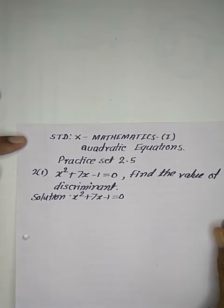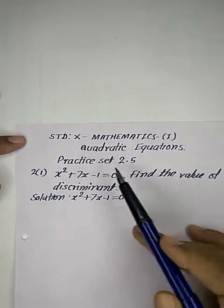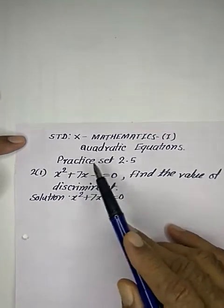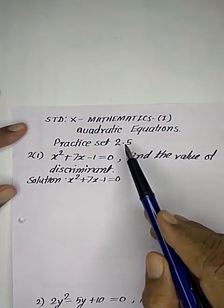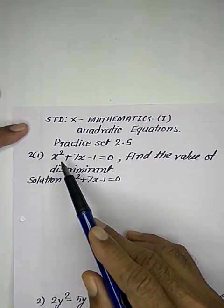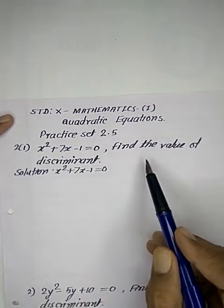Namaskar Vidyarthi Mitra. This is Standard 10th Mathematics, first unit Quadratic Equations. In this video we will solve Practice Set 2.5, Example 2. The first problem is x² + 7x - 1 = 0. Find the value of discriminant.